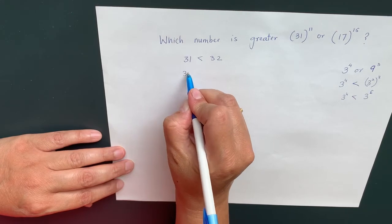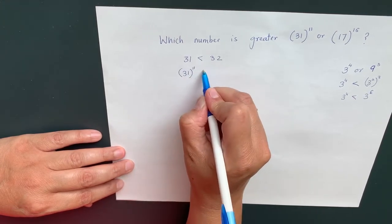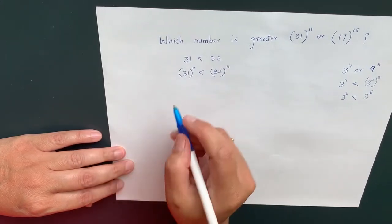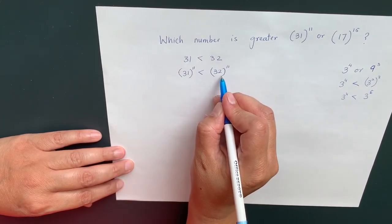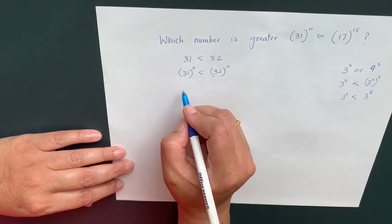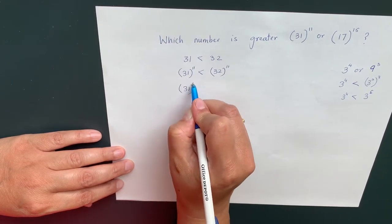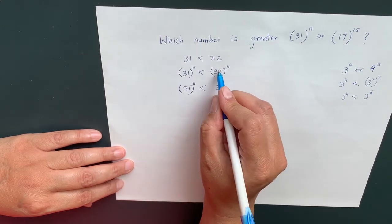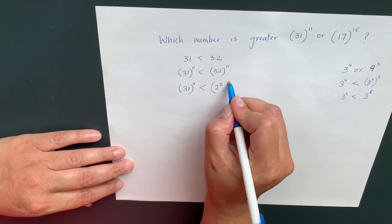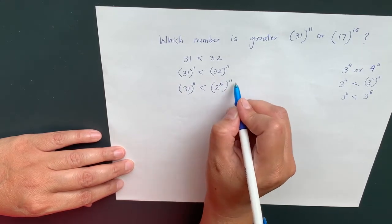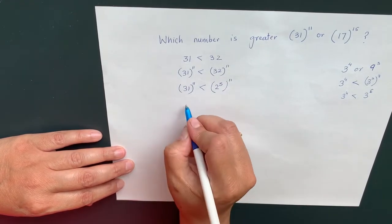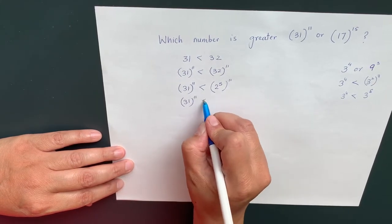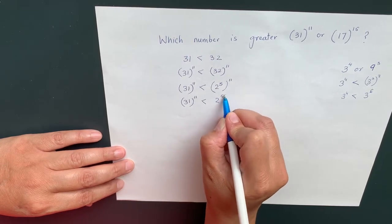So 31 to the power of 11 is less than 32 to the power of 11. We can write the number 32 as a base of 2. So 31 to the power of 11 is less than 2 to the power of 5 to the whole exponent of 11. So we can write 31 to the power of 11 is less than 2 to the power of 55.